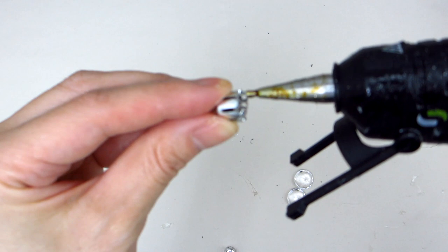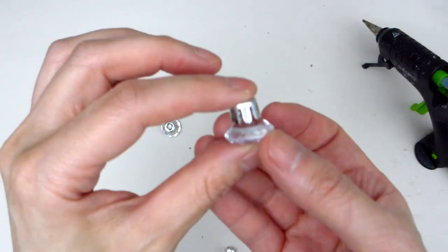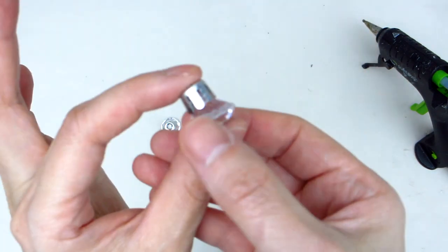Then flip the mirror over to the bottom so that it is facing up and adhere each of the four legs to each of the four corners of the mirror.